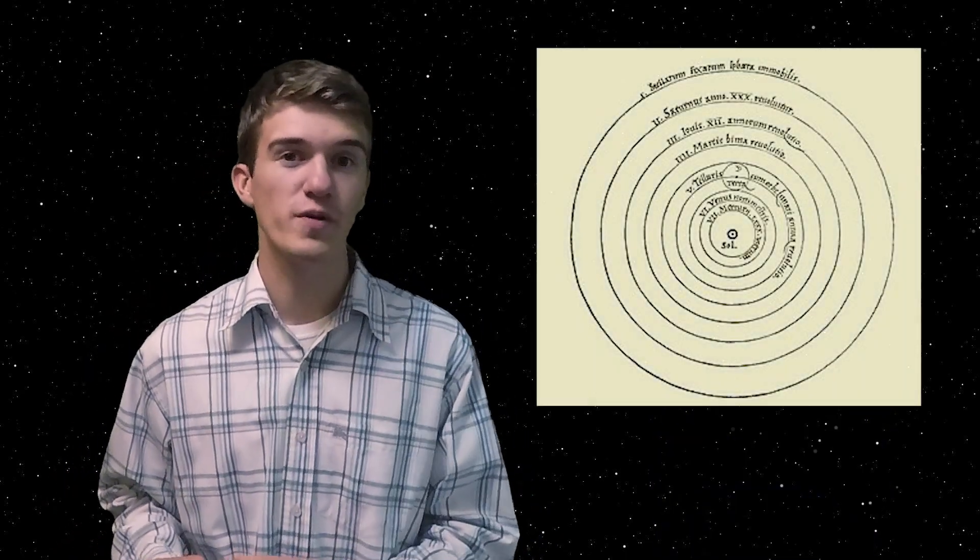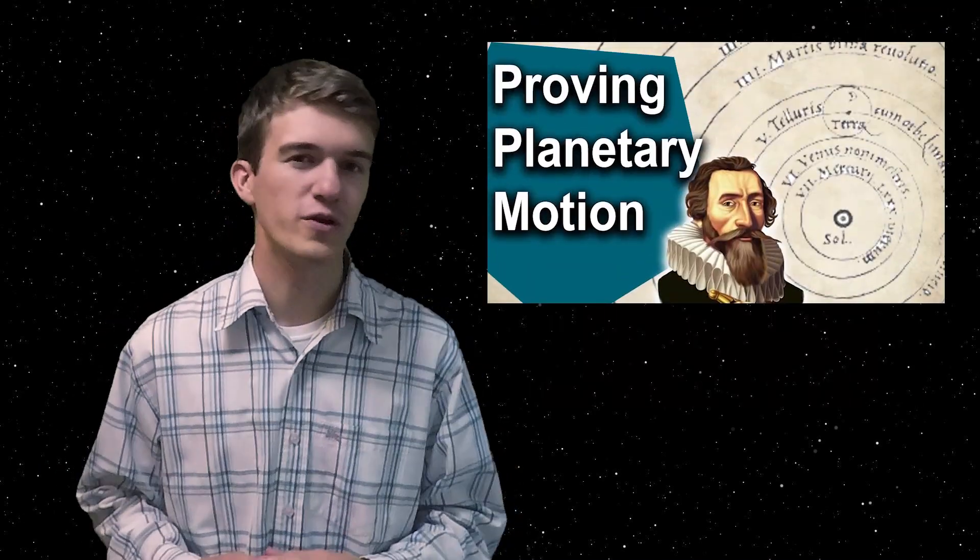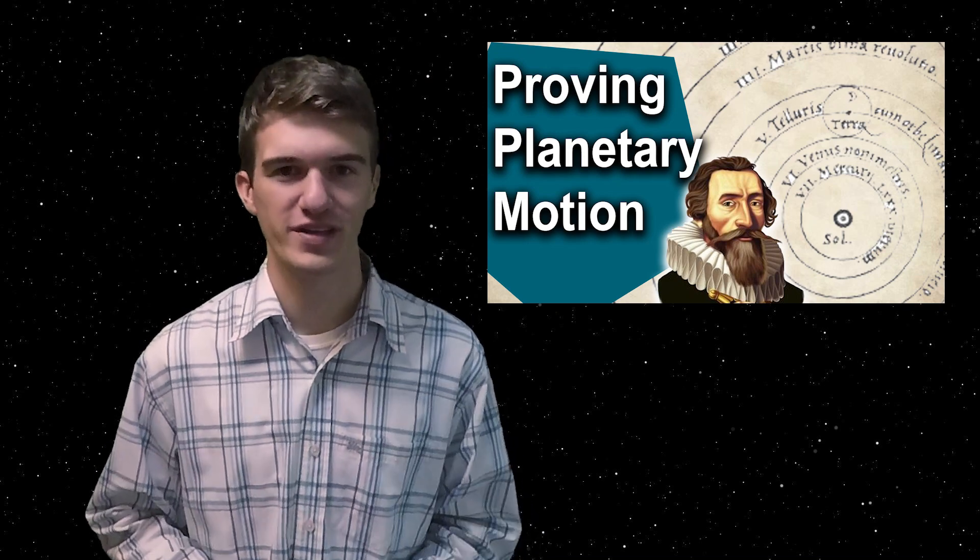Now Mars opposition turns out to be incredibly important to the history of astronomy and proving Copernicus right, that all the planets orbit around the Sun. If you want to learn more about that, check out this video where we discuss what Kepler was able to find and how he was able to do it.